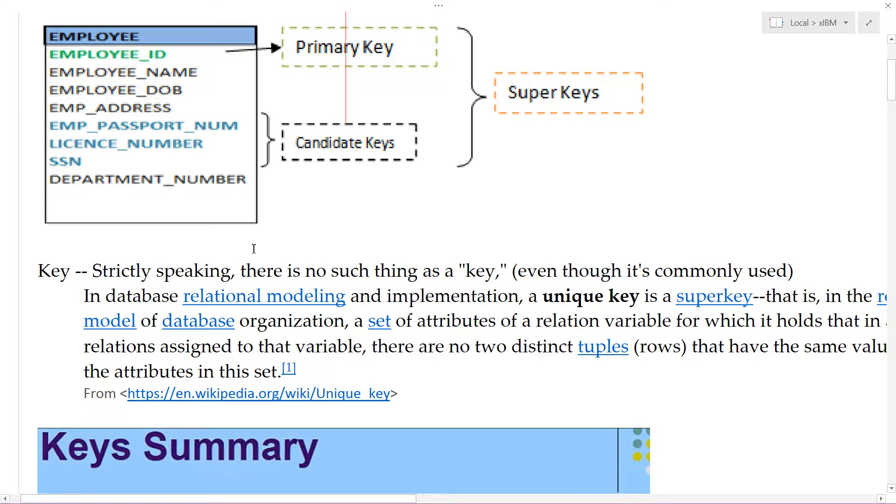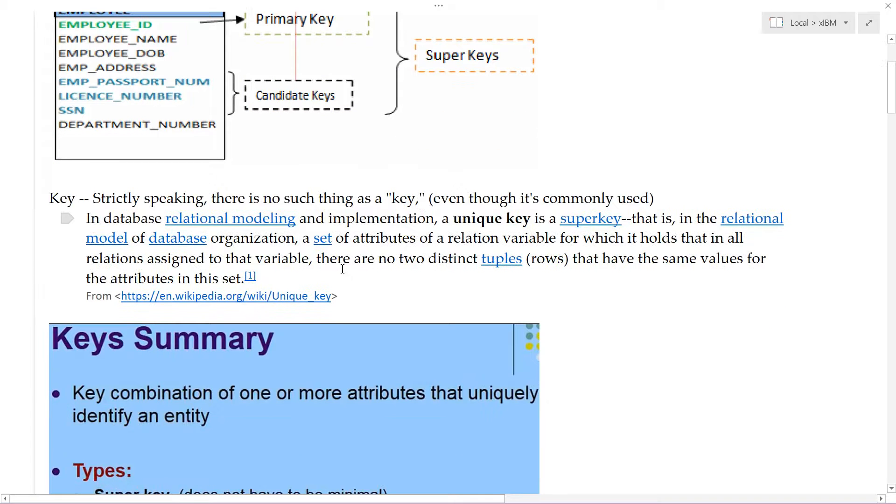Now, strictly speaking, there is no such thing as a key, even though it's the commonly used term. And I use it too, everyone uses it. But in database relational modeling and implementation, a unique key, as it's called, is a super key. That is, in the relational model of database organization, a set, mathematical set of attributes, of a relation variable for which it holds that in all relations assigned to that variable, there are no two distinct tuples, rows, that have the same values for the attributes in that set.